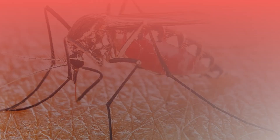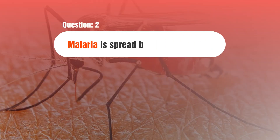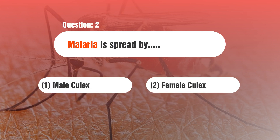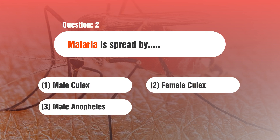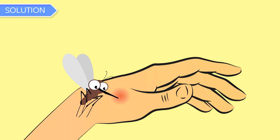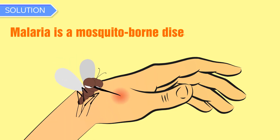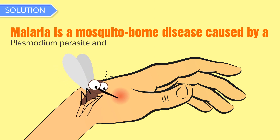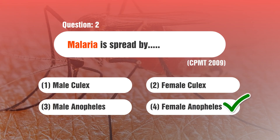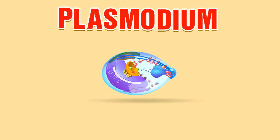Question 2: Malaria is spread by — 1) male Culex, 2) female Culex, 3) male Anopheles, 4) female Anopheles. This question was asked in CPMT 2009. Solution: Malaria is a mosquito-borne disease caused by a Plasmodium parasite and spread by the female Anopheles mosquito. Hence option 4 is the correct answer. This concludes our video on Plasmodium.